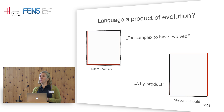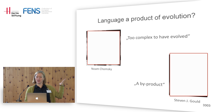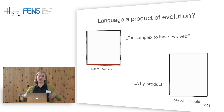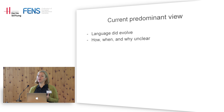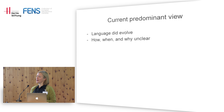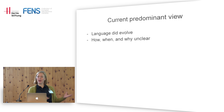Noam Chomsky said language is too complex to have evolved. Stephen Jay Gould said it wasn't selected for — it's a byproduct; something else was selected for, and with different capabilities our brains had, we stumbled upon language. The consensus view today, however, is that language did indeed evolve, or that the components making up language did evolve.